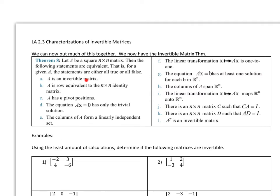then the following statements are equivalent. That is, for a given A, the statements are all either true or all false. If A is true, then the rest are all true. If A is false, then the rest are all false.